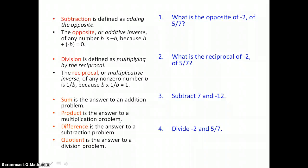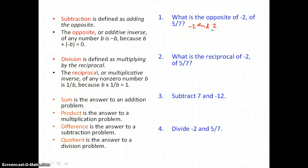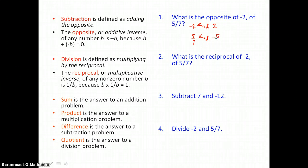We have four problems to solve. Problem 1: what is the opposite of negative 2 and of 5 sevenths? Negative 2 and positive 2 are opposites because when we add them together we get 0, and they are the same distance from 0 on the number line but in opposite directions. The opposite of 5 sevenths is negative 5 sevenths, because when you add them together you get 0.